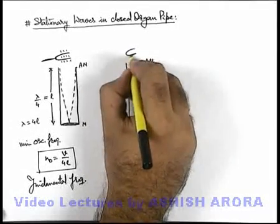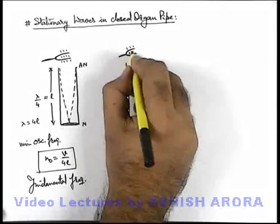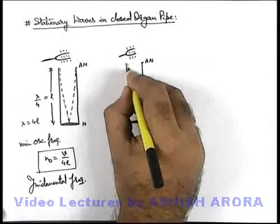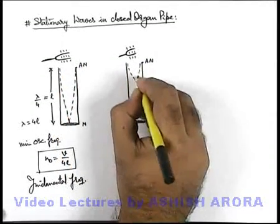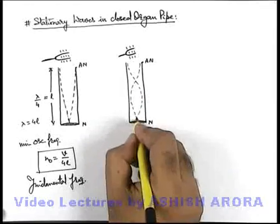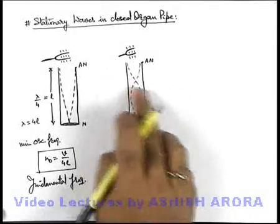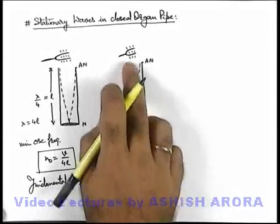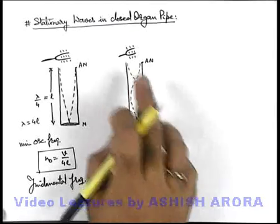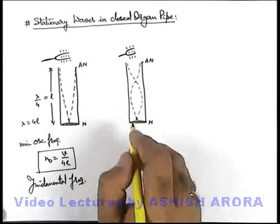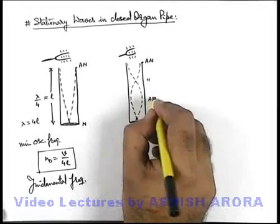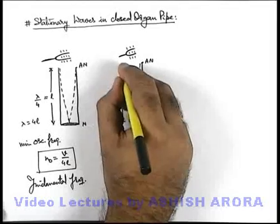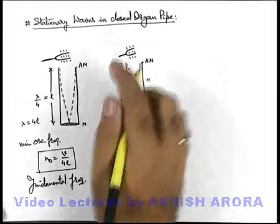If a tuning fork of some different frequency is brought such that the wavelength is reduced and one extra loop is introduced — this is the displacement curve I am drawing. Some students get confused that this corresponds to a transverse wave. Practically, in air or any gas in the organ pipe, only longitudinal waves exist, so I am just drawing the displacement curve. In this situation there will be 2 nodes and 2 anti-nodes. Looking at the wavelength, this portion is lambda by 2 and this is lambda by 4.